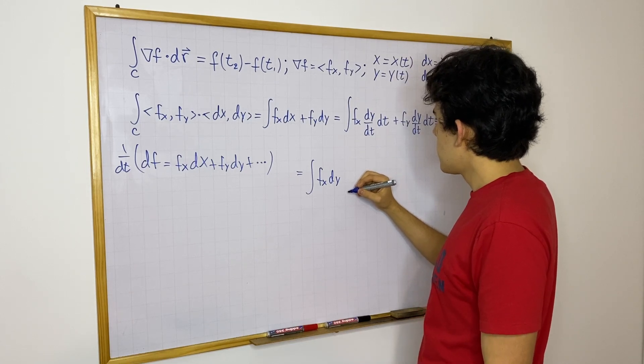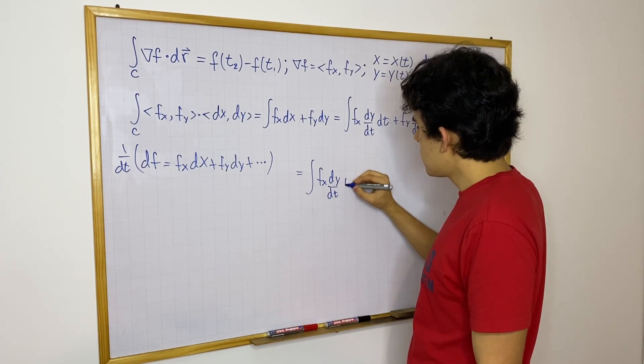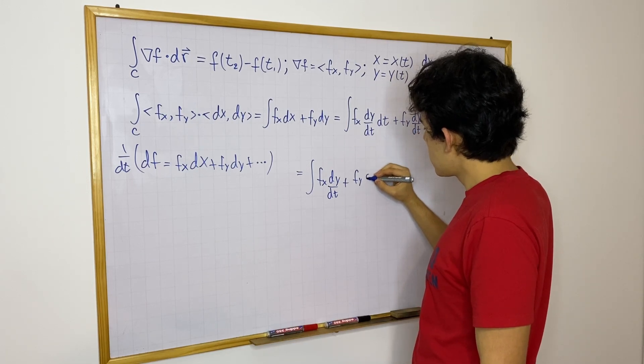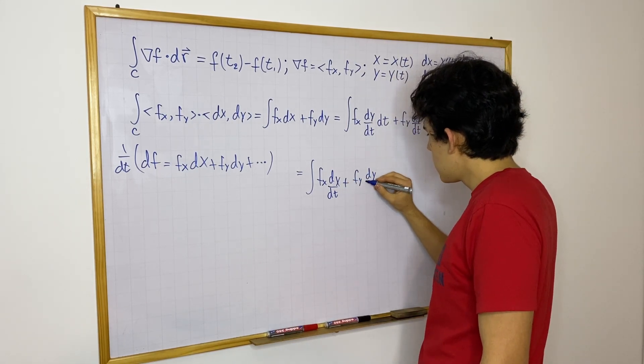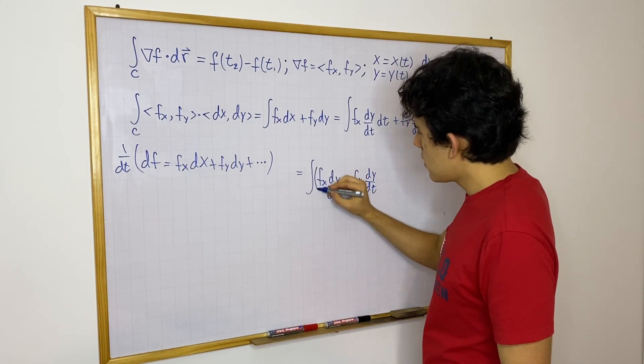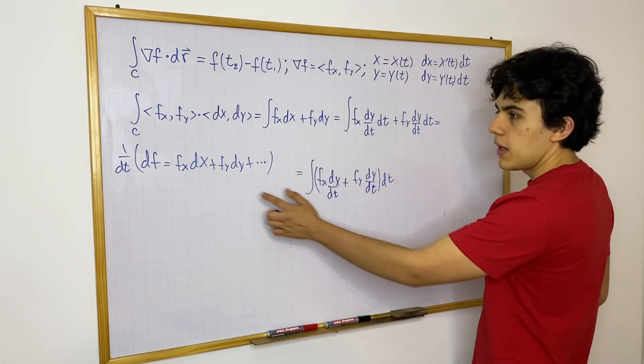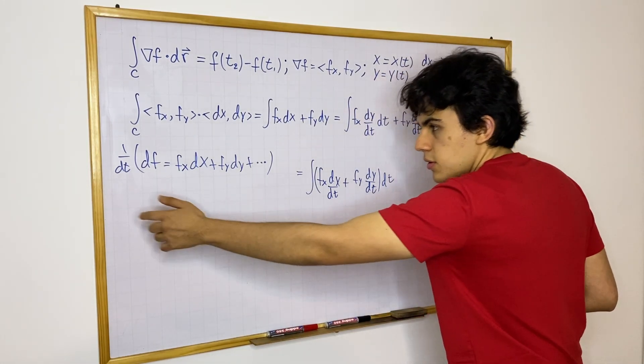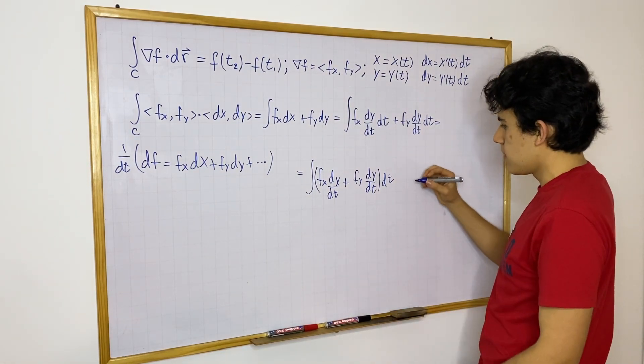f_x dx/dt, f_x dy/dt, f_x dx/dt plus f_y dy/dt, oh sorry, this is an x, that's an x, dy/dt, and then we have a factor of dt outside. Now, based on this equation, if we multiply by 1 over dt, well, this will be equal to df over dt.